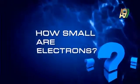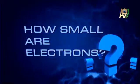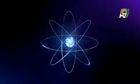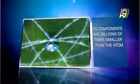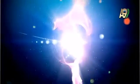How small are electrons? Atoms consist of a nucleus and electrons revolving around that nucleus. The atom itself is extraordinarily minute, but its components are billions of times smaller than the atom. The nucleus that makes up almost the whole of the atom — in other words, the matter inside it — occupies just one ten billionth of its volume.